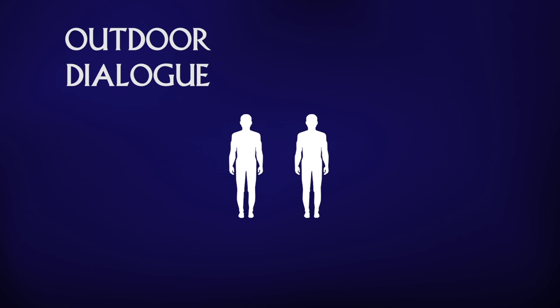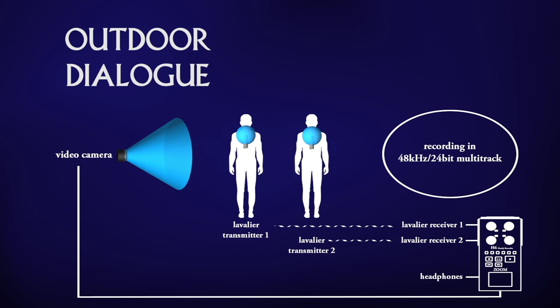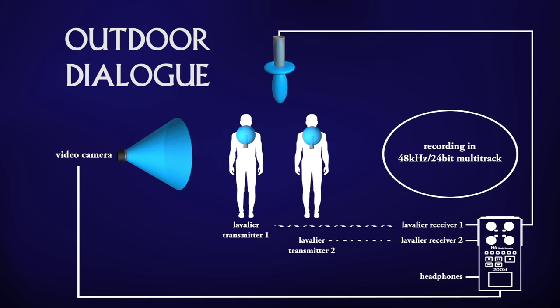The second scenario is two people having a dialogue in a park. The only thing that changes during the recording is that you need a different microphone and a wind filter for booming. Depending on how far away the actors are, a shotgun or a super-cardioid microphone would be the best for the job.